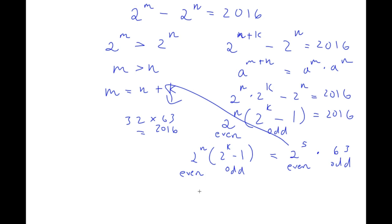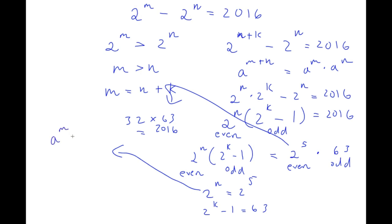Now this gives us two equations: 2 to the power of n is equal to 2 to the power of 5, and 2 to the power of k minus 1 is equal to 63. I set the even numbers equal to each other and the odd numbers equal to each other. For 2 to the power of n equals 2 to the power of 5: if a to the power of m equals a to the power of n, then m equals n. So n is equal to 5.